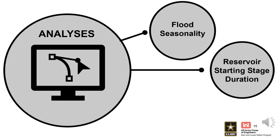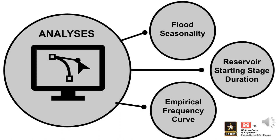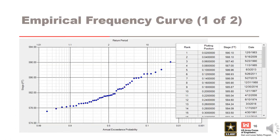The final analysis in RFA is the empirical frequency curve. The objective is to understand how to perform empirical frequency curve analysis and how it will be used to inform the loading curve. The empirical frequency curve analysis can be performed on stage or inflow. This curve is created by ranking the annual maximum data in descending order, assigning the data a plotting position, and then plotting the data.